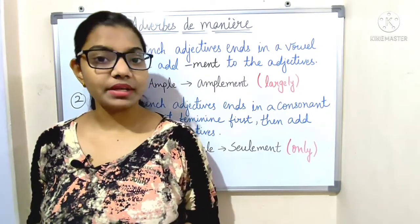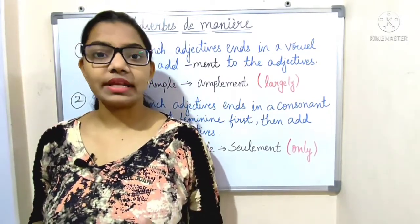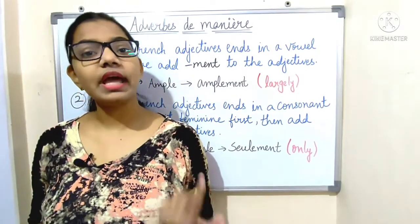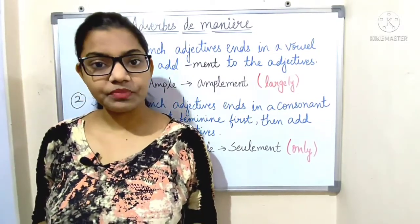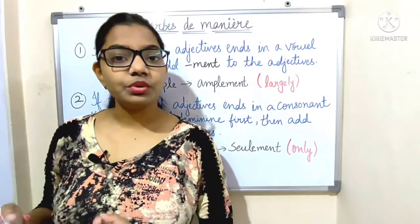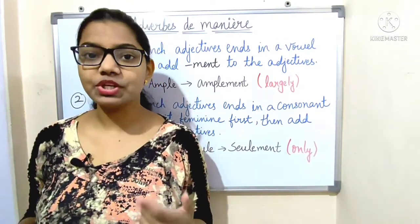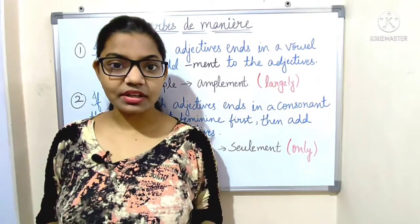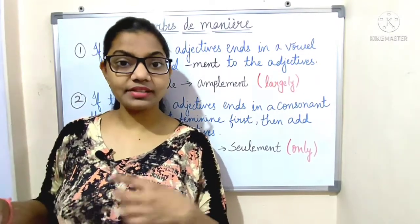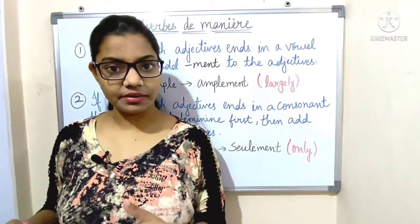An adverb of manner describes how we do an action — it tells us how something happens. For example, 'I quickly ran to the shops.' So, how I do an action? I do it in a very fast way. That is 'quickly.' So, quickly is an adverb of manner.